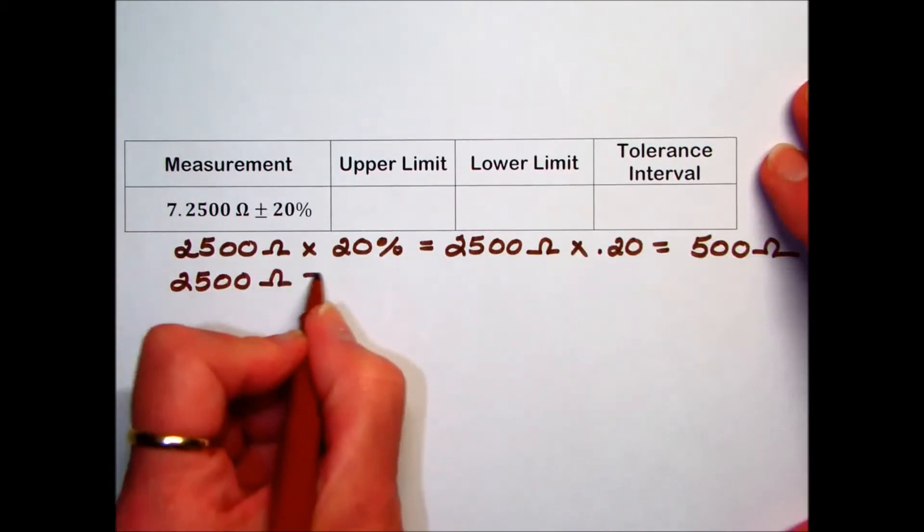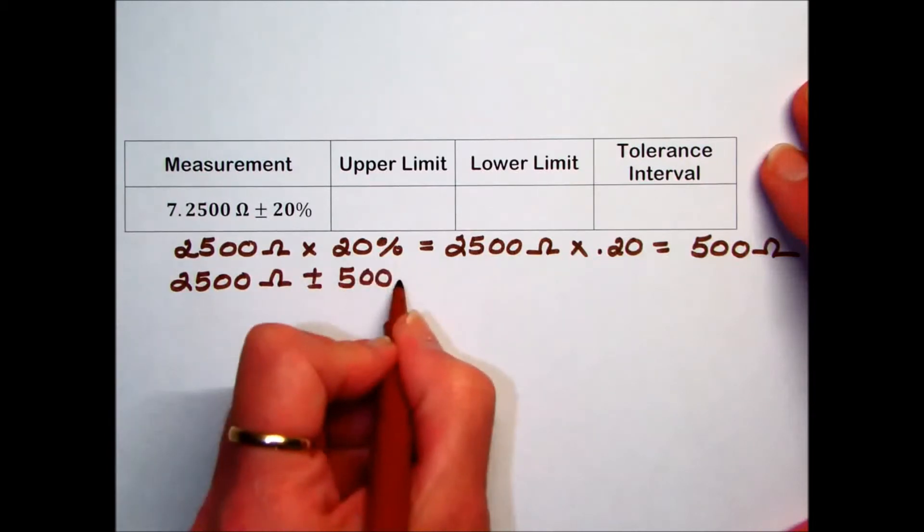So now we have a standard measurement of 2500 ohms plus or minus 500 ohms.